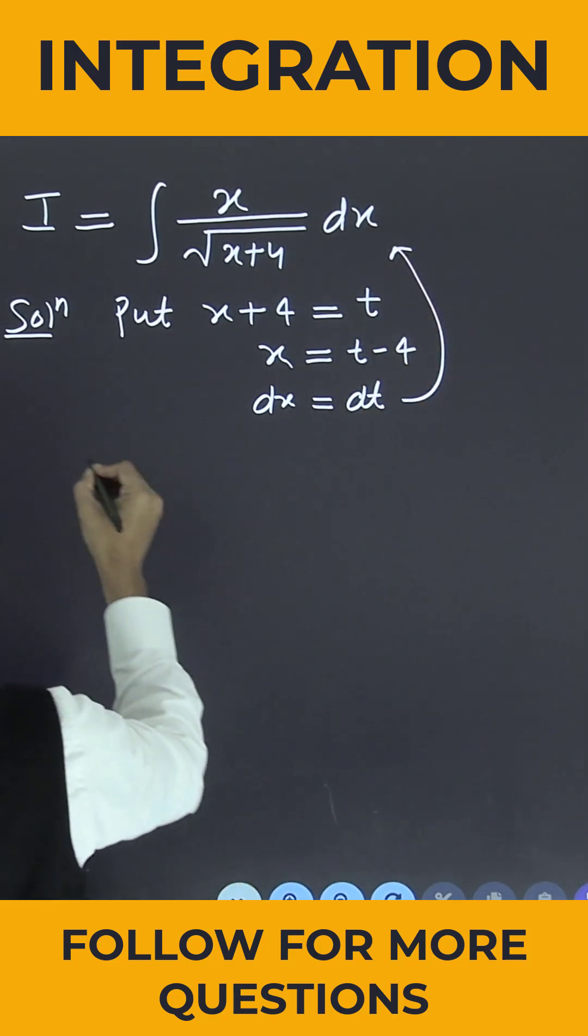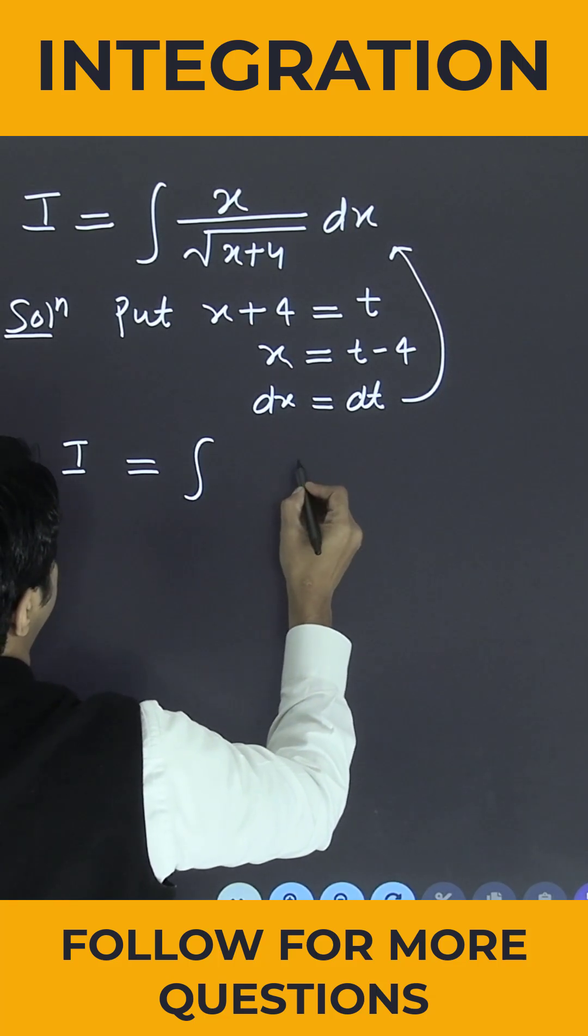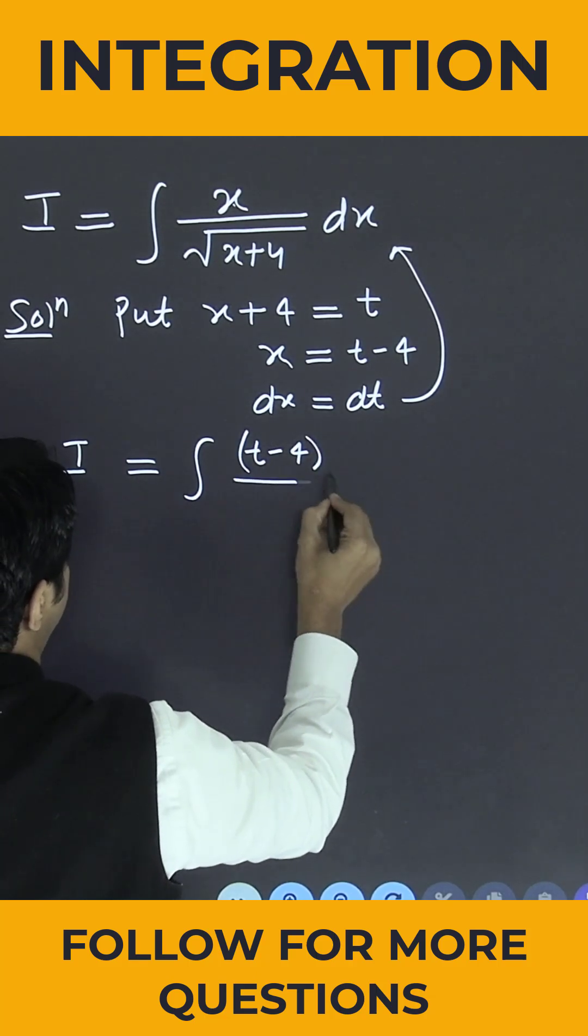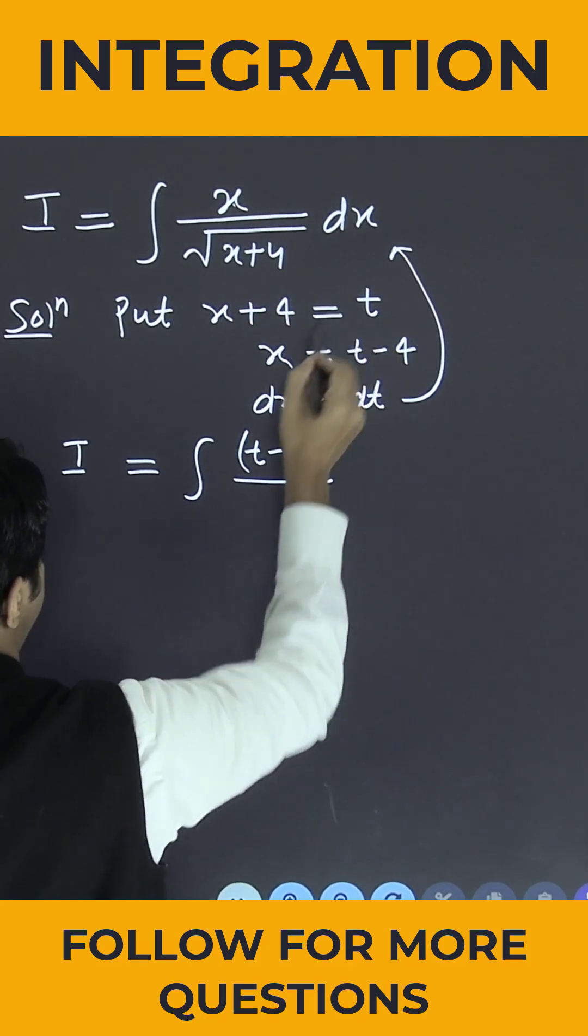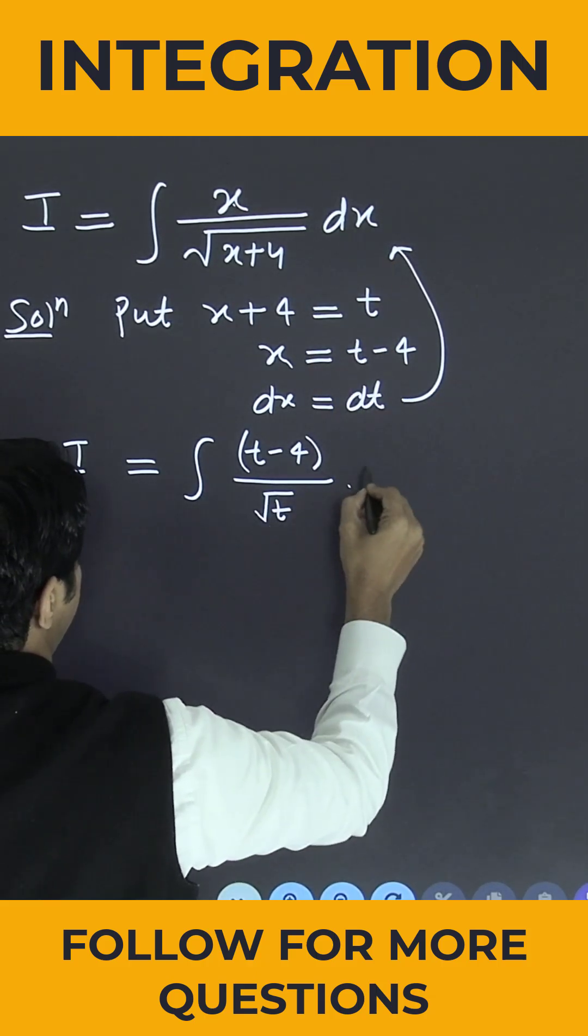Now put in the above integral so that I equals the integration. What is the value of x? It is t minus 4 divided by, what is x plus 4? It is t. So this is root t. What is the value of dx? It is dt.